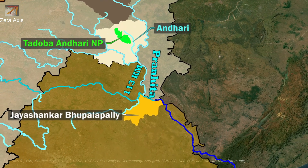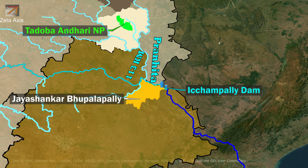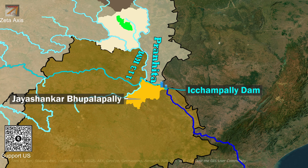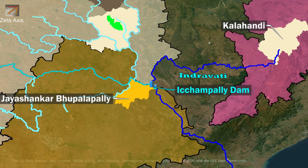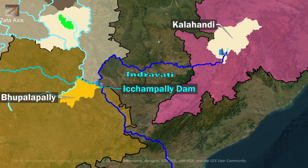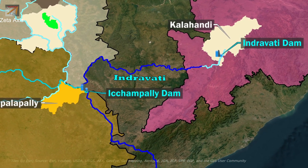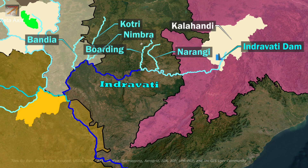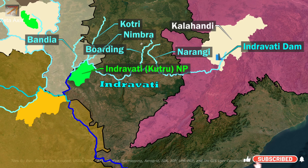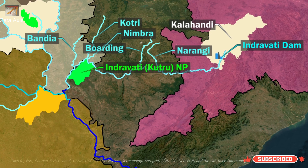Downstream of the confluence of Pranahita and Godavari, Ichhampalli Dam is built on Godavari River. Within Jayashankar Bhupalpalli district, Godavari River merges with Indravati River. Indravati River originates from Kalahandi district of Odisha on the western slopes of the Eastern Ghats. Indravati Dam is built on the Indravati River in Kalahandi district. During its course, Indravati is joined by tributaries like Bhaskarel, Narangi, Boding, Nibra, Kotri and Bandiya. The Indravati passes through Indravati National Park before flowing downstream to meet Godavari.